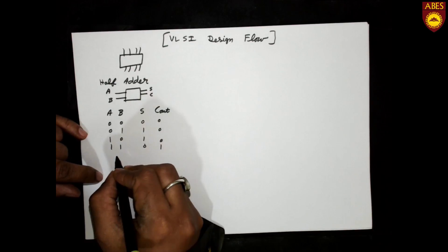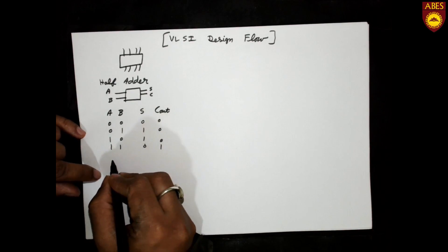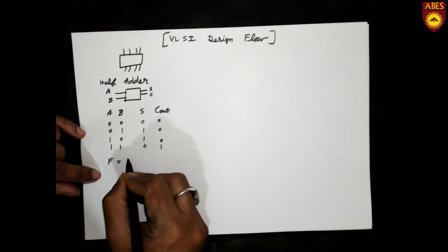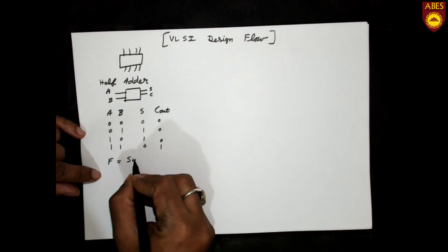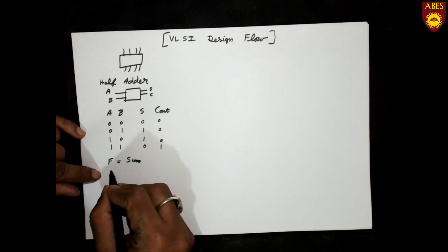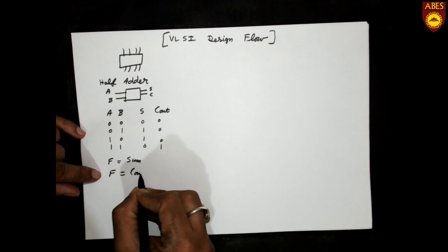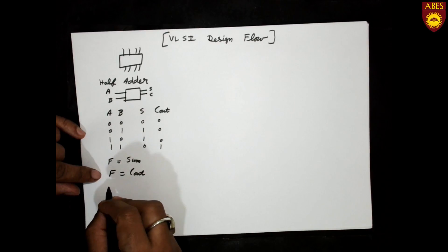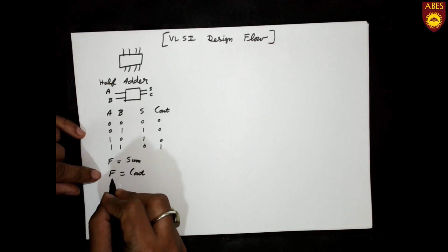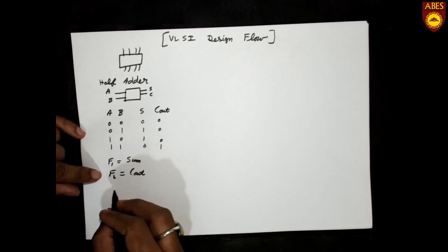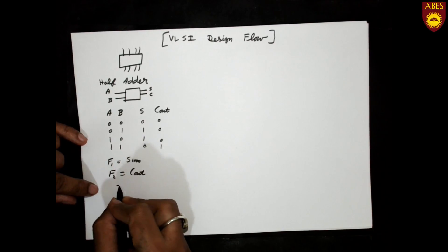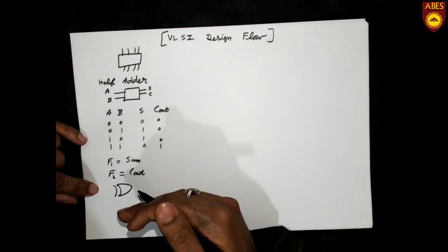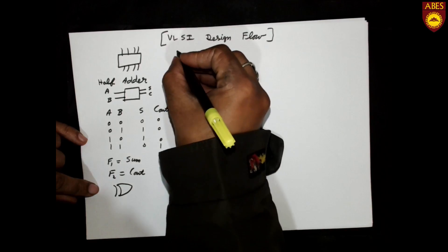The next step, based on the truth table, is to write the Boolean expressions for sum and carry. Based on those Boolean expressions, the next step is to design the circuit of the half adder.